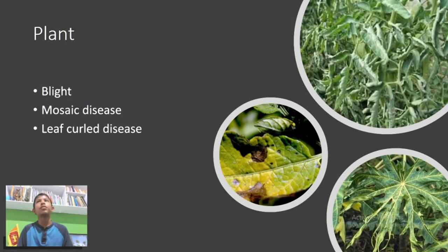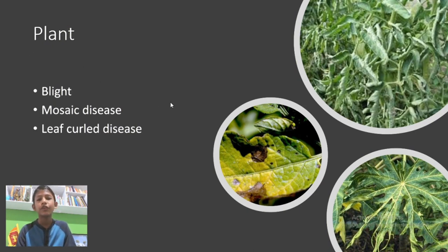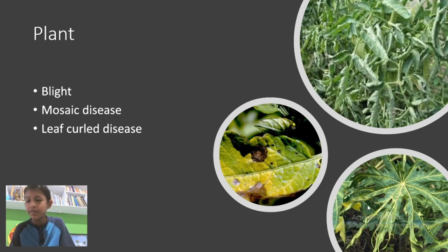Microorganisms cause diseases to man and animals, but they cause diseases to plants too. The first one is blight, which you can see in this leaf. The second one is mosaic disease, which you can see in this papaya leaf. The third one is leaf curl disease — you can see here that the leaves are curled back up.